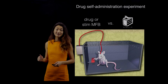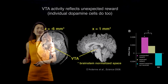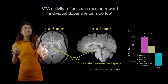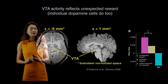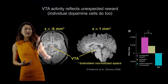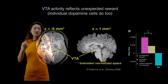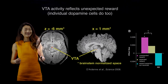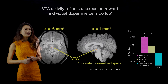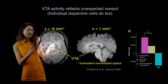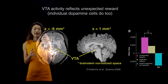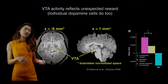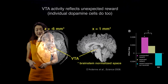That is how powerful the system is. The reason it's so powerful is because it reflects unexpected reward — this is the part of the brain that becomes active when something good happens and you weren't expecting it. Not only does the VTA (the ventral tegmental area) reflect this type of unexpected reward, but individual dopamine cells can also reflect unexpected reward.